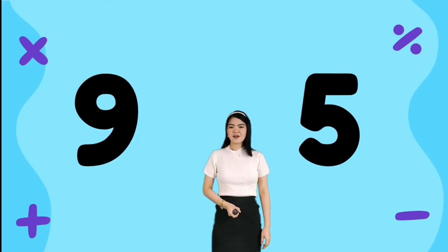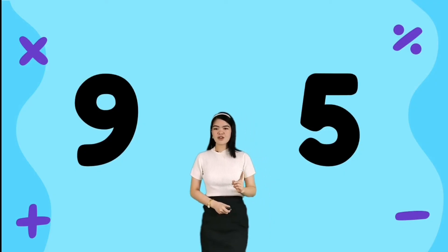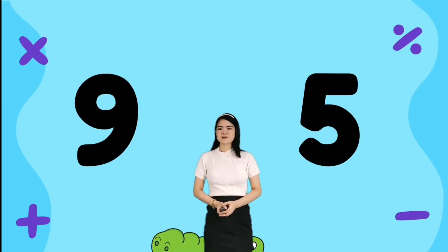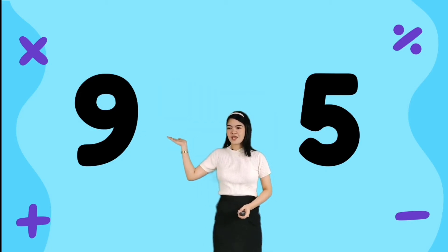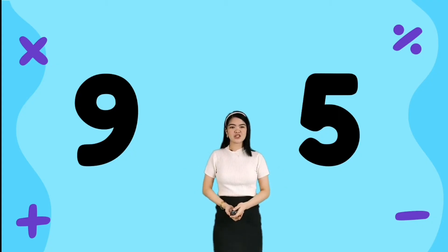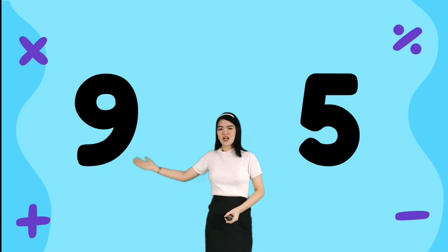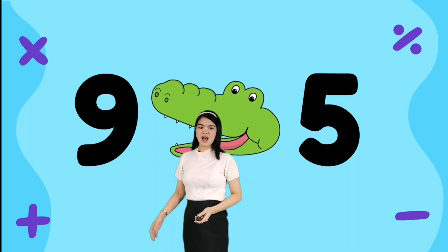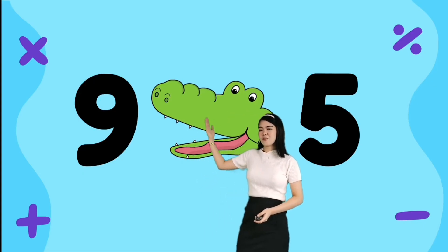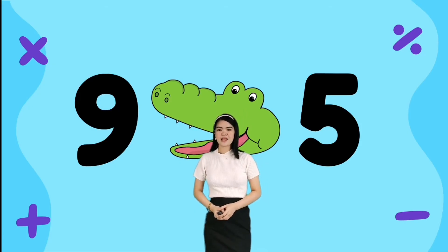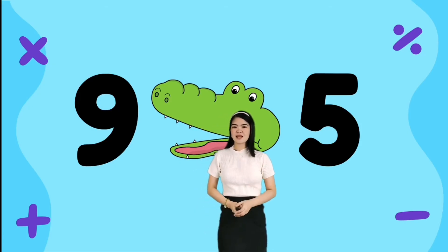Let's have another example. We can use the mouth of an alligator to represent the symbol. We have nine and five. Which one has the larger number? Nine is larger than five, so the alligator's mouth opens to number nine. We can say that nine is greater than five. Always remember that the alligator's mouth is always open to the larger number.